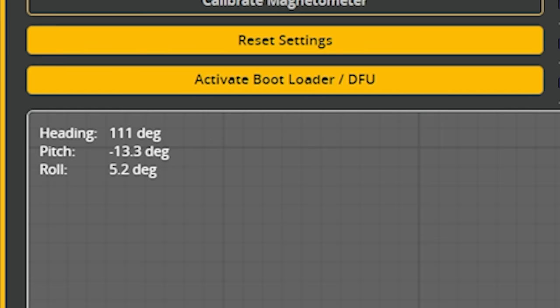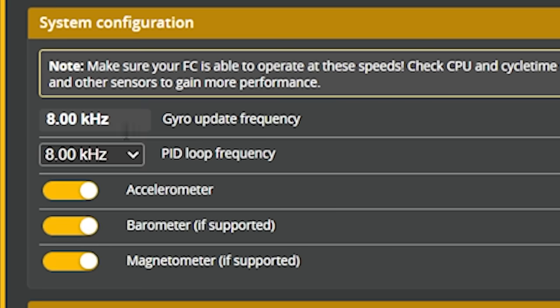In previous versions of Betaflight, it was possible to set the gyro update frequency to a number less than what they call the native sampling rate of the gyro. For the ICM 2000 series and MPU 6000 series gyros used on many flight controllers, the native gyro sampling rate is eight kilohertz — what the manufacturer designed them to work best at. Choosing to sample them slower causes some artifacting in the data, which can negatively affect flight performance.